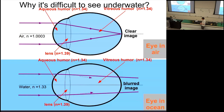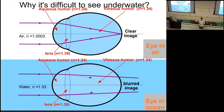Why can't you see clearly in a swimming pool without goggles? When light goes into your eye, it passes through the cornea, through an adjustable lens, then through the aqueous humor toward the retina. At each boundary between optical materials, the light is refracted. The key refraction that normally helps you focus happens at the air-cornea interface — and underwater, that interface no longer exists in the same way.